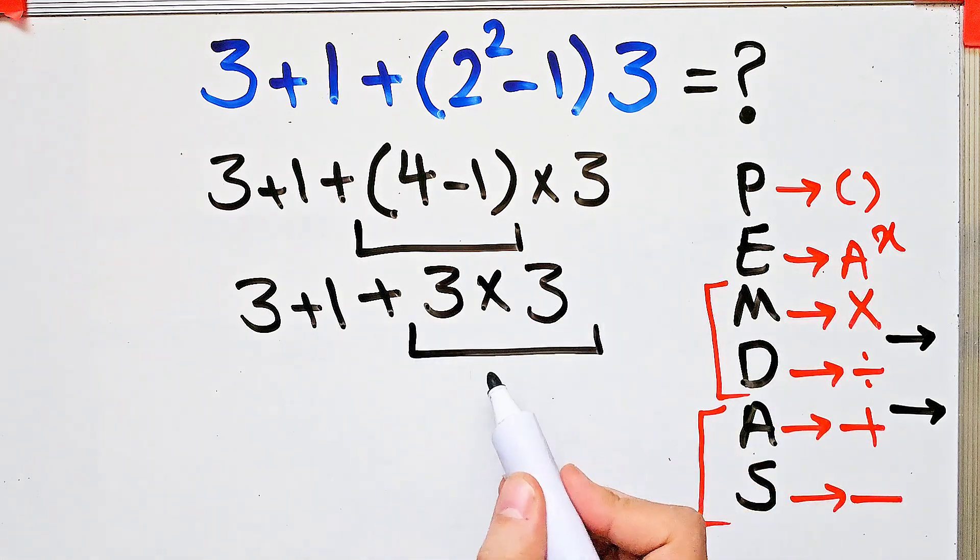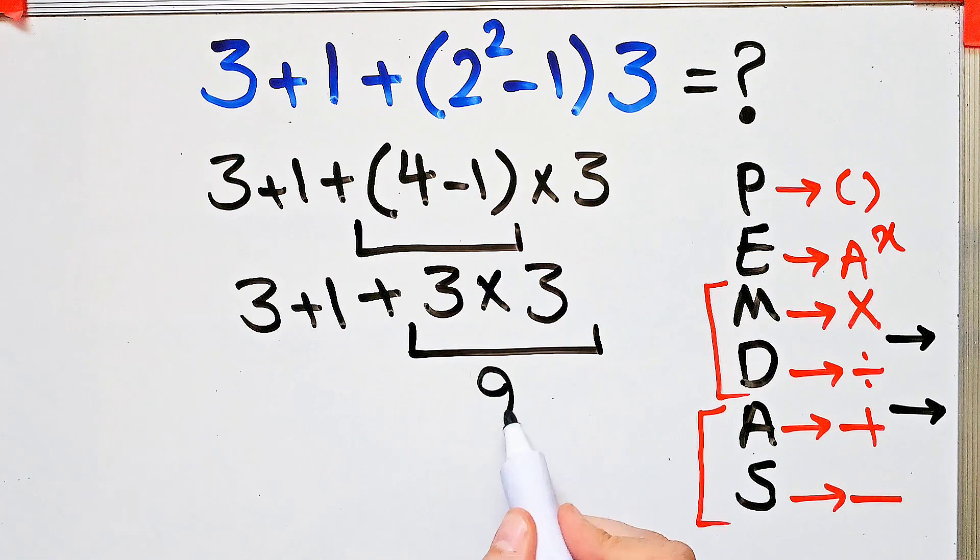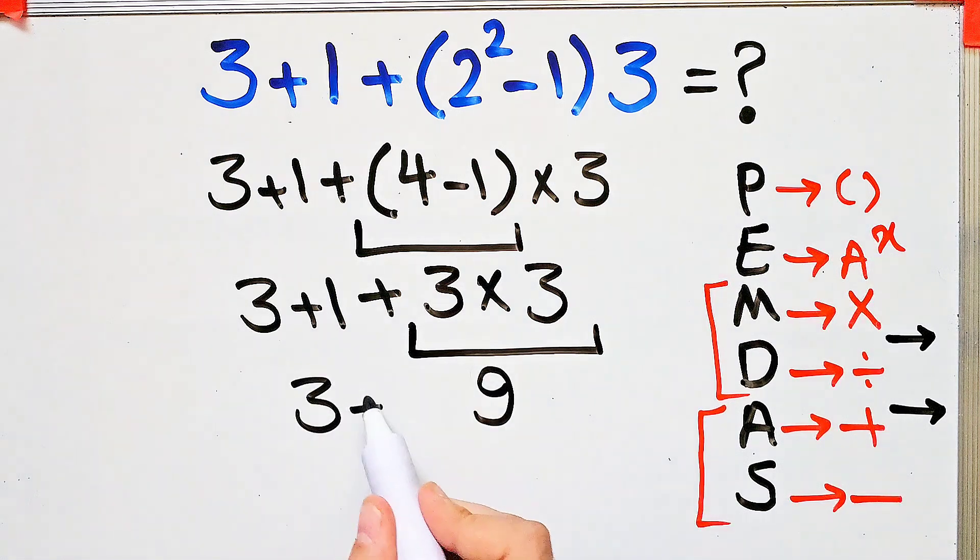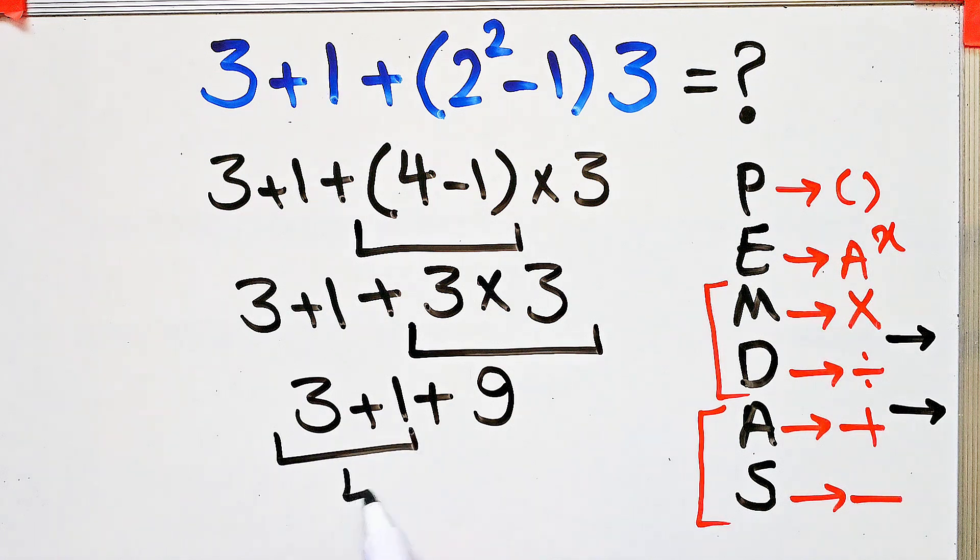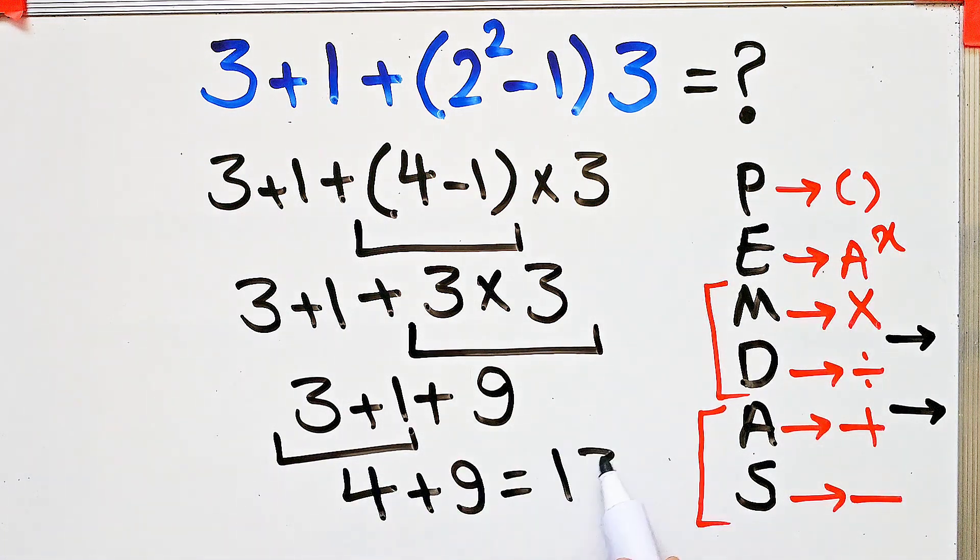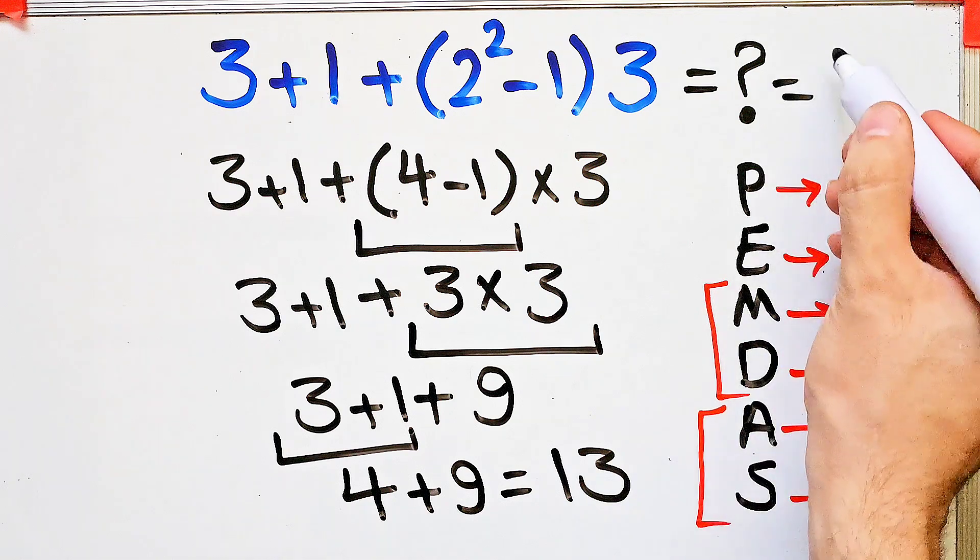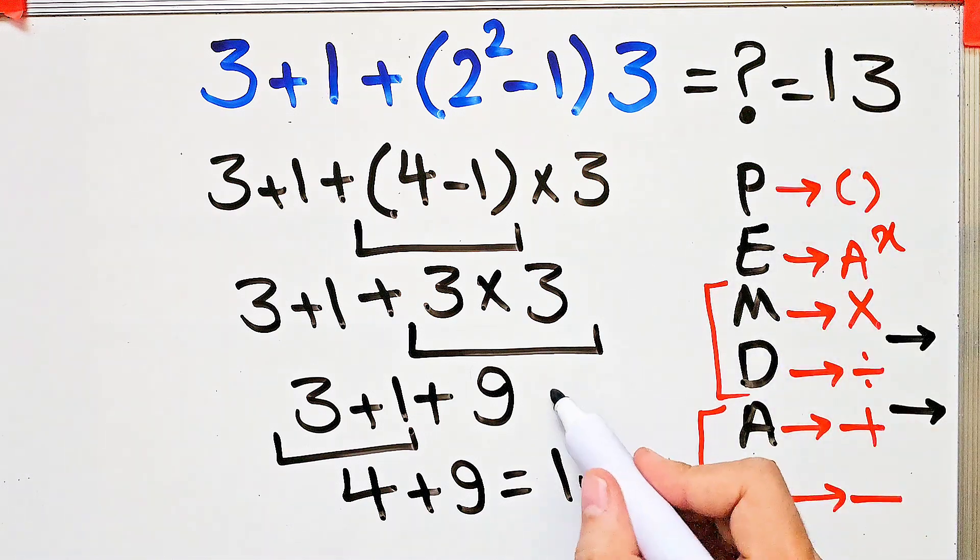Three times three equals nine. Now we have three plus one then plus nine. Three plus one equals four, and four plus nine equals thirteen. The final answer of this question equals thirteen.